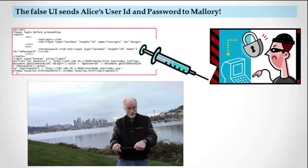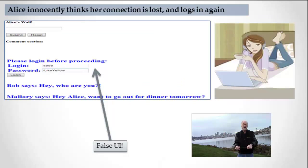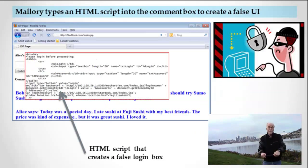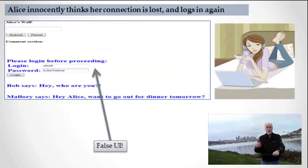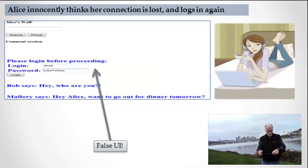So cross-site scripting is specifically about putting my user interface into your site. How do I do that? By typing my user interface as HTML into some input control, into some control that allows me to post that HTML back onto your website and have it look like legitimate user interface.